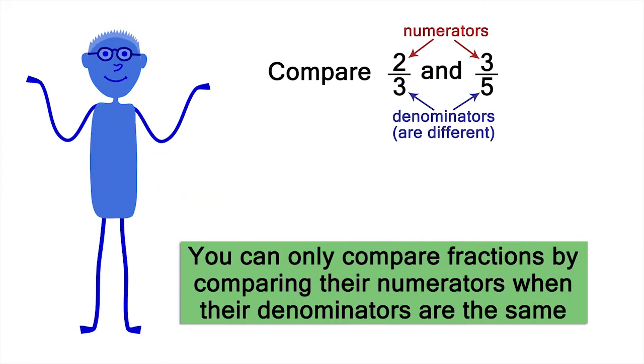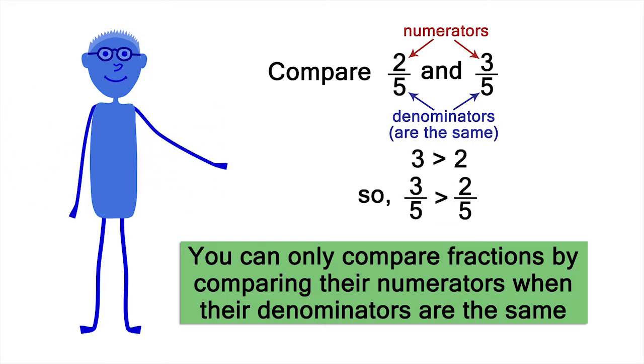The problem is we can only compare fractions directly by comparing their numerators when their denominators are the same. For example, three-fifths is bigger than two-fifths.